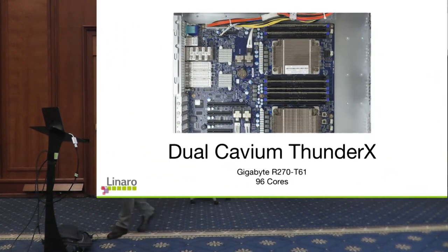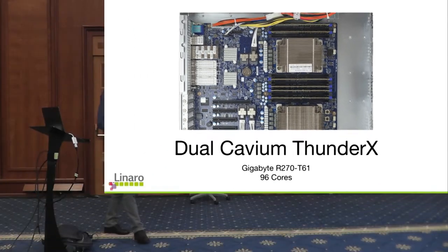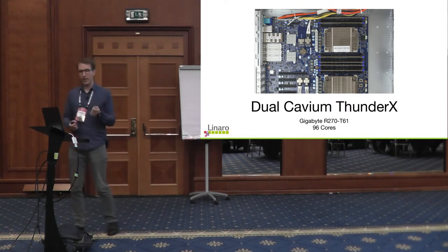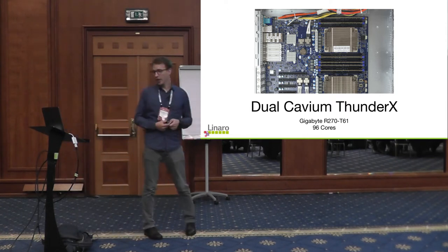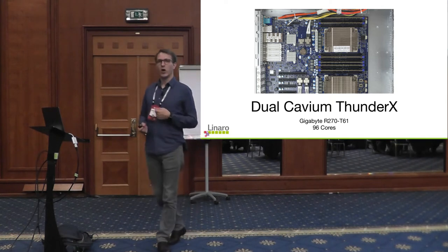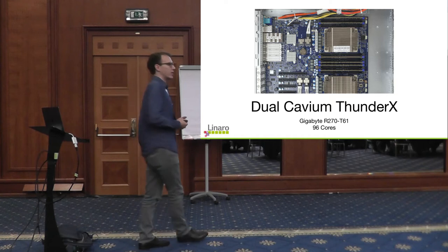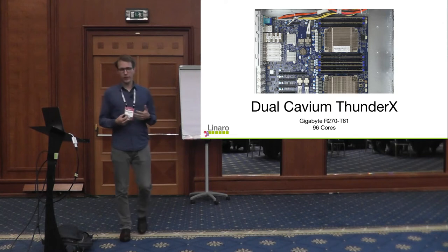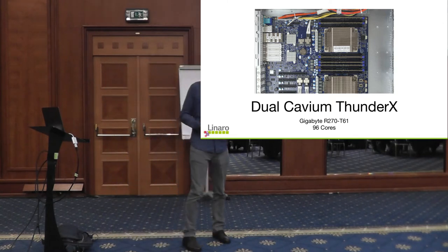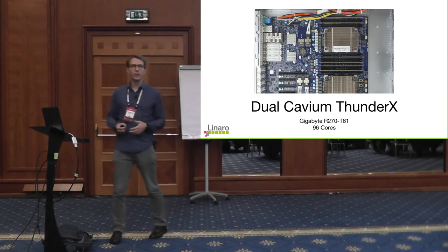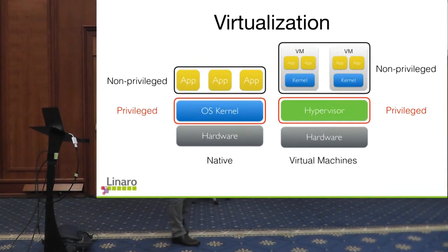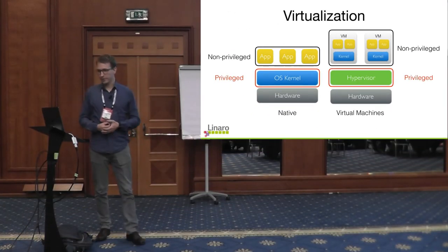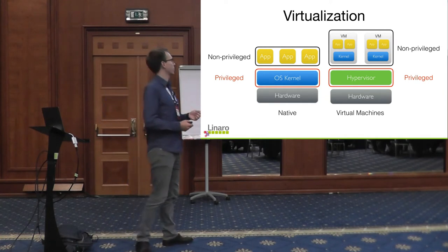Today we have machines like dual-socket ThunderX with 96 cores and a lot of high-speed IO. When we talk about virtualization performance in modern computing, it's not enough that virtual machines just execute most instructions natively. We also have to be fast when the hypervisor supports the VM for things like fast IO or inter-processor communication between 96 cores.